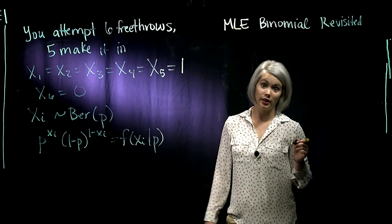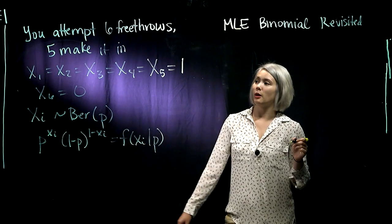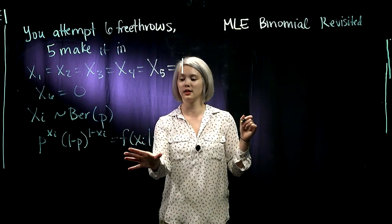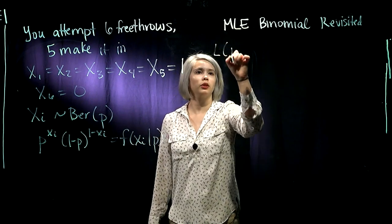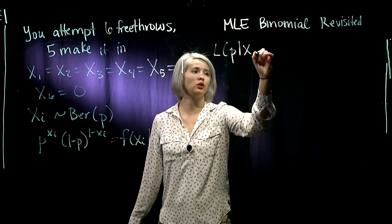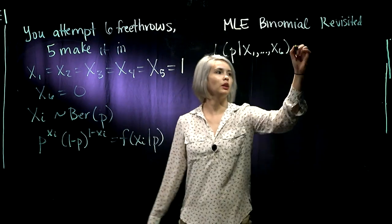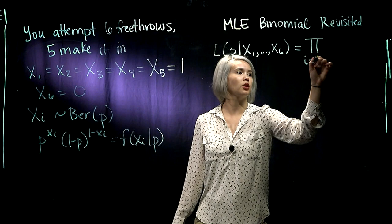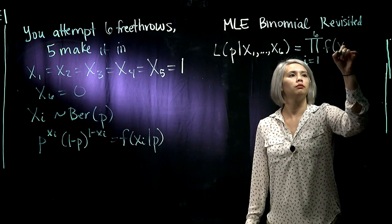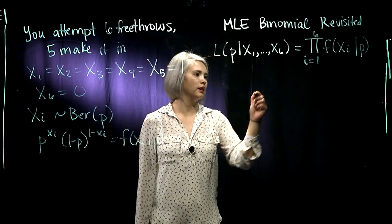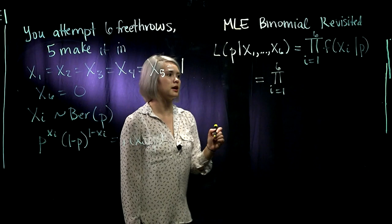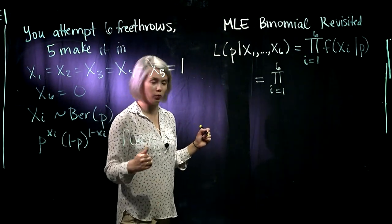We also said these are independent, so when we want to write down our likelihood function, we can just take the product of these PMFs. We're looking for the likelihood of p given the data we have collected, x1 through x6. That's the product of these PMFs, so we have the product of p to the xi times 1 minus p to the 1 minus xi.